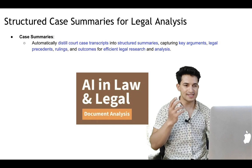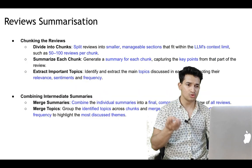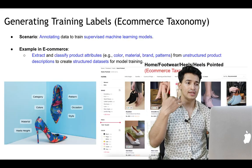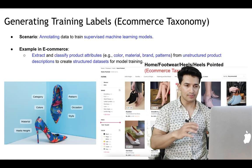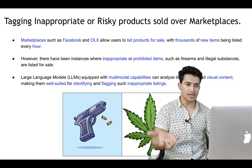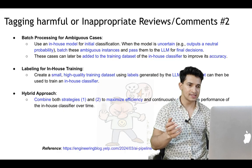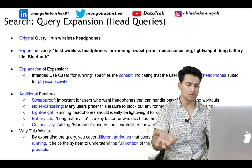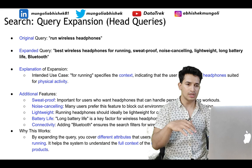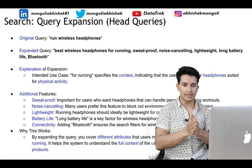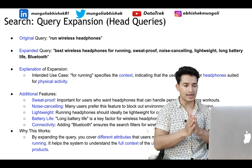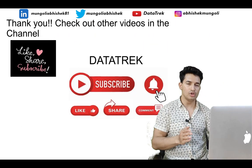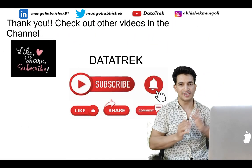So these are the use cases we covered: legal analysis, personalized education, Amazon's review summarization, conversational search, improving e-commerce taxonomy through multimodal LLM capabilities, using LLMs to identify risky products sold over marketplaces, Yelp using LLMs to identify harmful versus non-harmful reviews, and companies like Misho using LLMs for search to better understand user intent and provide a better search experience. With that, we come to the end of this video. Hope you liked it — please like and subscribe and stay tuned for more such updates. Bye.